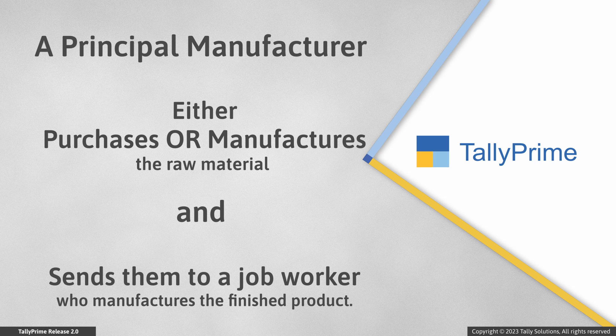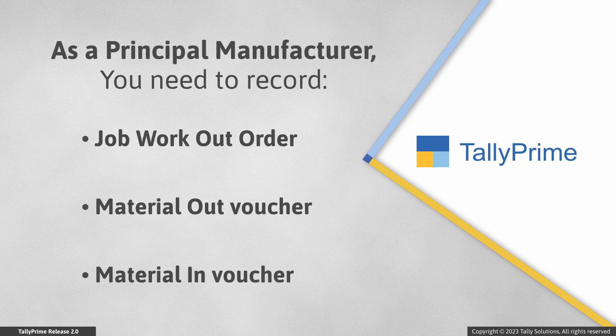As a principal manufacturer of a product, you must be either purchasing raw materials from a vendor or manufacturing them in your own unit. Thereafter, you send the material to a job worker who manufactures the finished product. In such cases, you will need to record a job workout transaction for the job worker — a material out to keep a record of the raw material sent to the job worker, and a material in when the finished product arrives at your godown or unit.